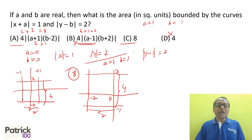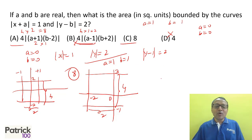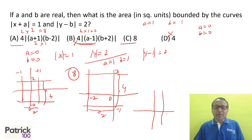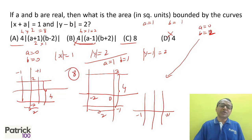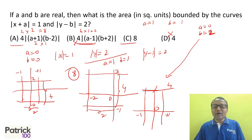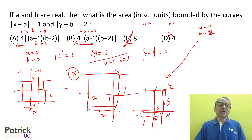Try a = 0, b = 2: x ranges from −1 to 1 (length = 2). |y−2| = 2 gives y = 4 or y = 0, so y ranges from 0 to 4 (length = 4). Area = 2 × 4 = 8. Only option C satisfies; option A gives 0 because (2−2) = 0. So the answer is C.